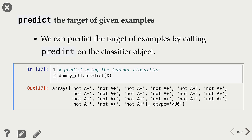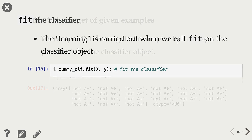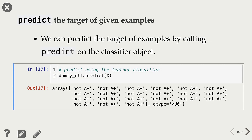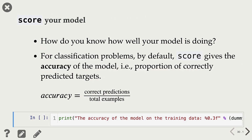The next step is prediction. Now we have our model, and using it we can predict on examples. Here I'm predicting on our training data X, and these are the targets given by the predict method. As expected, it's predicting 'not A+' for all examples, because that's what we asked it to do with the most frequent strategy. Now an important step is evaluating our model. In scikit-learn, we evaluate using the score method, which for classification problems by default gives the accuracy of the model — that is, the proportion of correctly predicted targets.